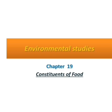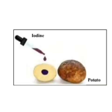Carbohydrates, or carbs, are sugar molecules. Along with proteins and fats, carbohydrates are one of the three main nutrients found in foods. Your body breaks down carbohydrates into glucose. Glucose, or blood sugar, is the main source of energy for your body's cells and organs.